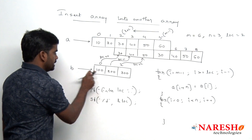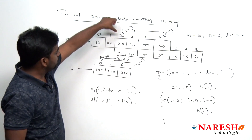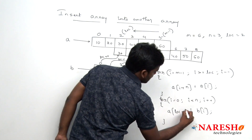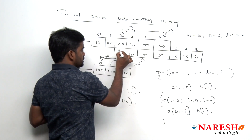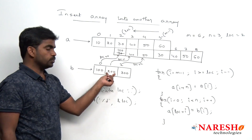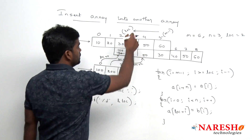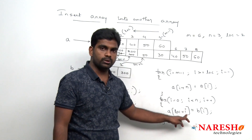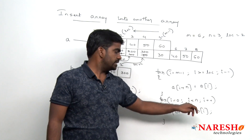In the first iteration i is 0: b[0] which is 100 is stored into a[location + 0], that is a[2]. In the next iteration i is 1: b[1] which is 200 is stored into a[location + 1], that is a[3]. In the third iteration i is 2: b[2] which is 300 is stored into a[location + 2], that is a[4]. When i becomes 3, the condition 3 less than 3 is false and the loop ends.